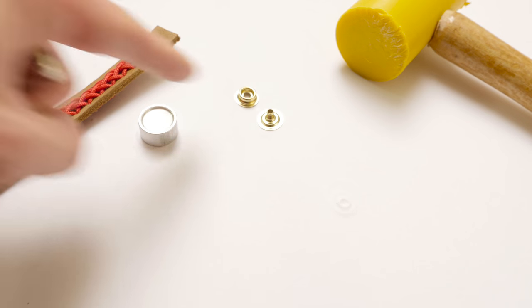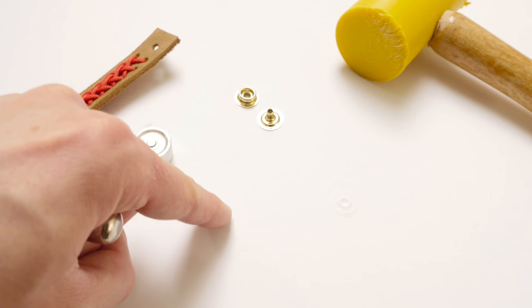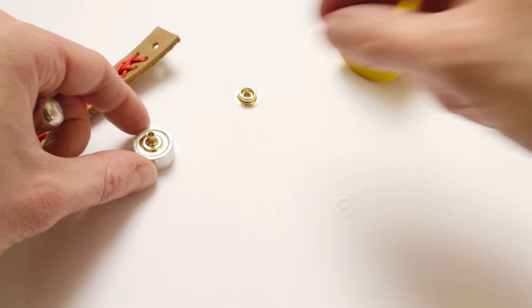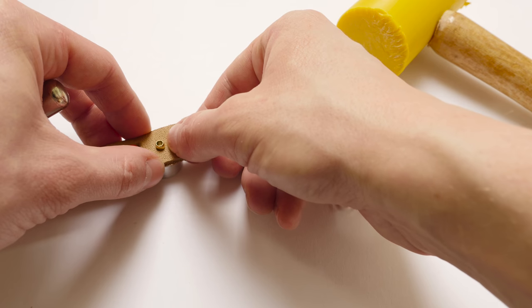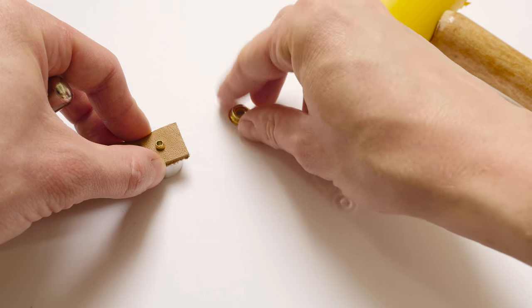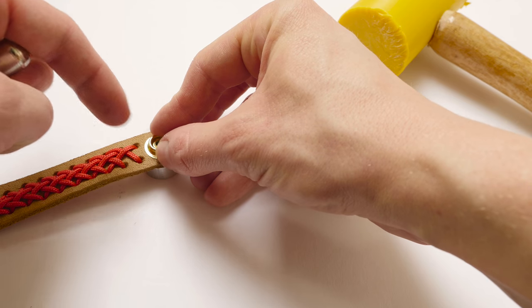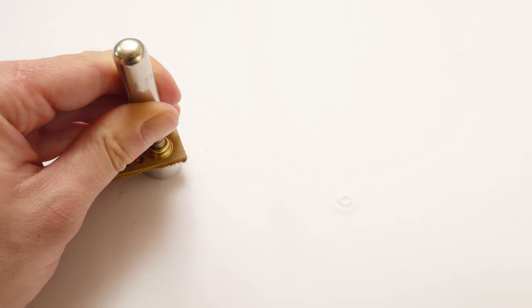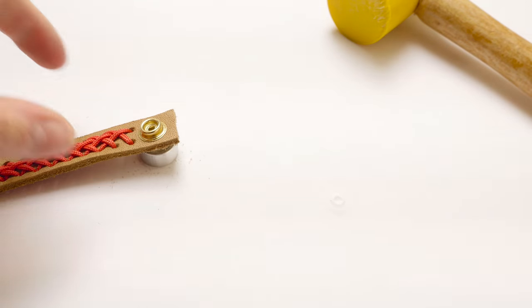To set the other part of our snap, we're going to turn around the anvil. If you don't have this part, just do it on a hard surface. We're going to place our eyelet on top of the anvil, then place our strap over it, this time flesh side down. And then place a stud over it. Again hit down a few times, then in a circular motion. With that we have set our snap.